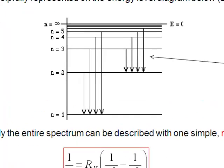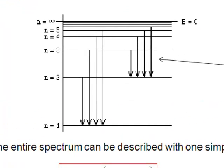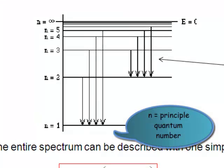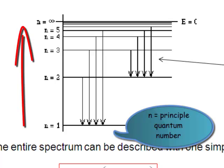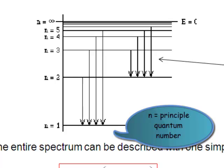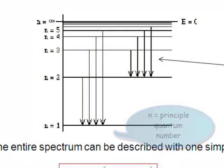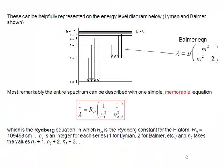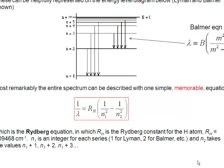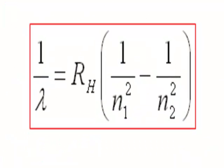We have a series of energy levels starting from n equal to one, then n equal to one, two, three, and so on all the way up to infinity. The key thing is these lines are getting closer together as we go up in this number. Most remarkably, the entire spectrum can be described by a single equation.